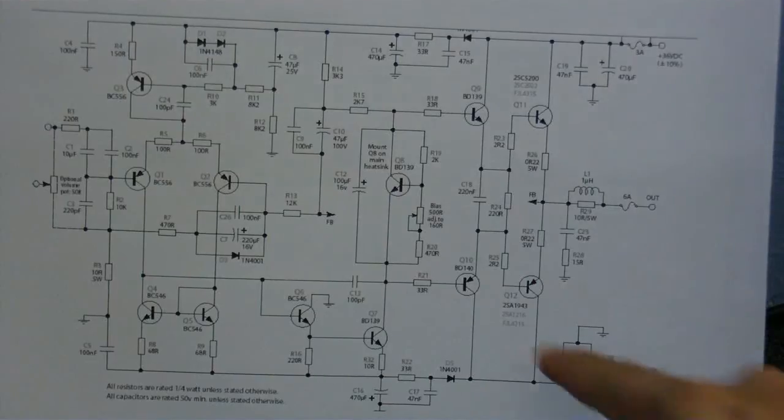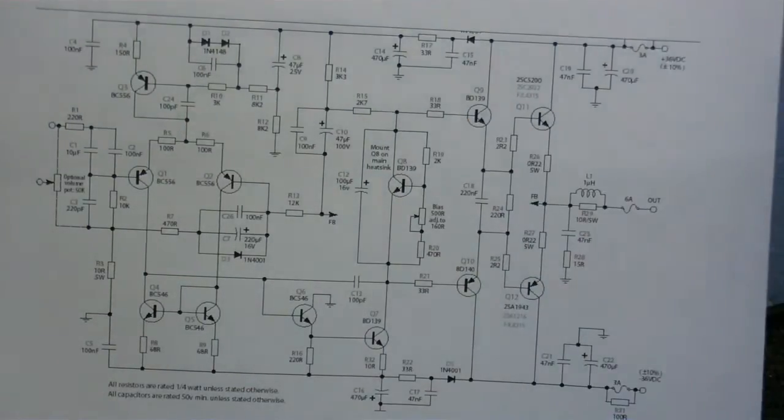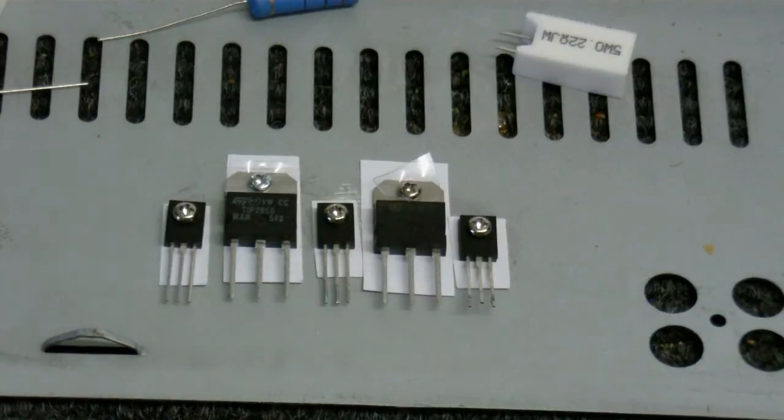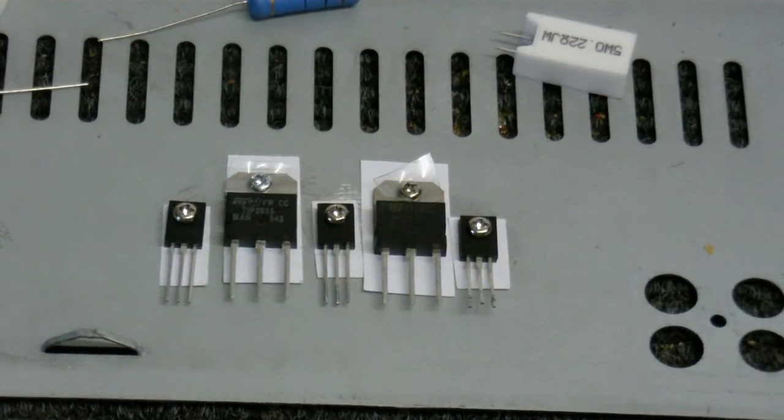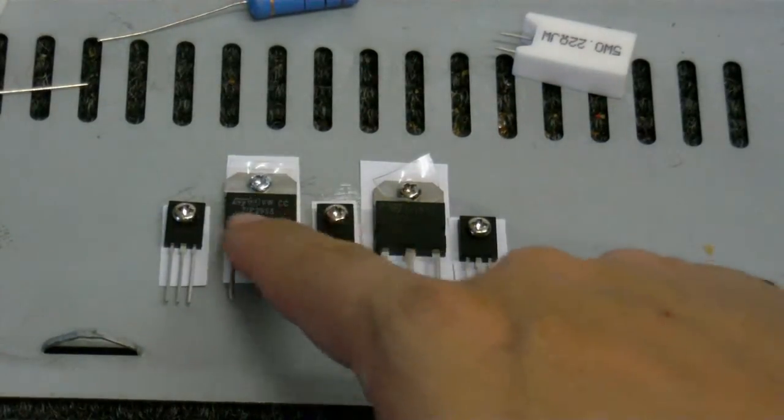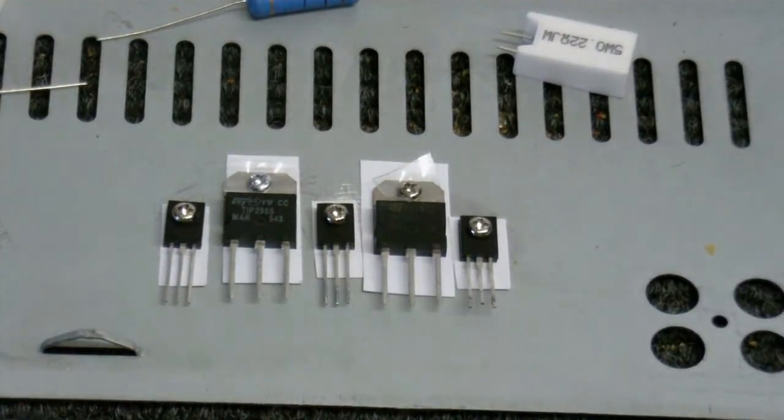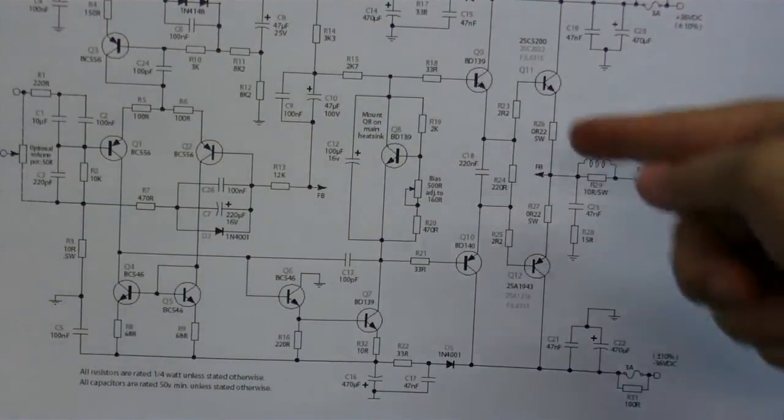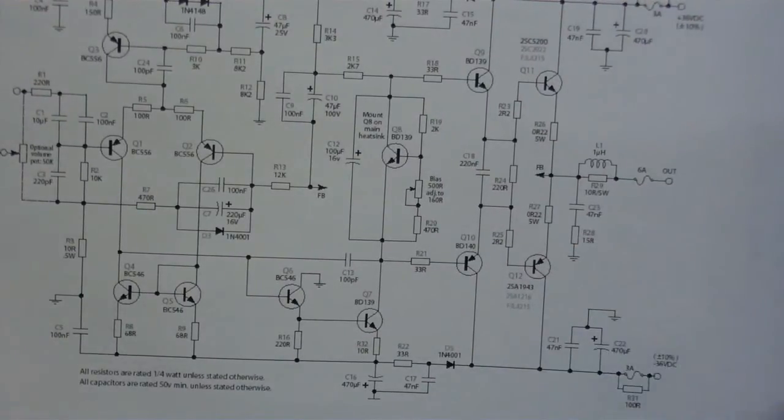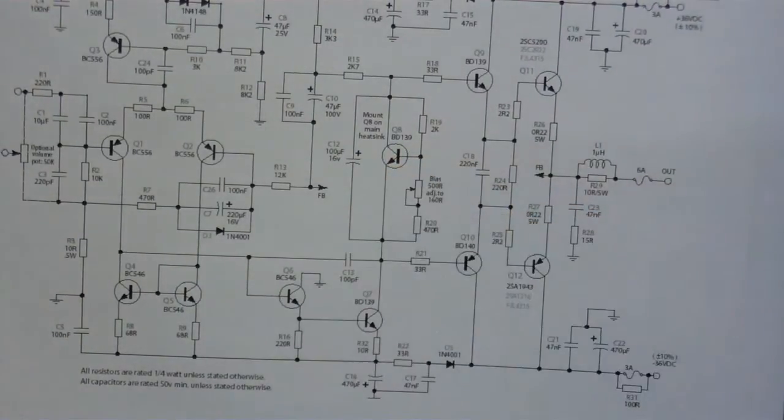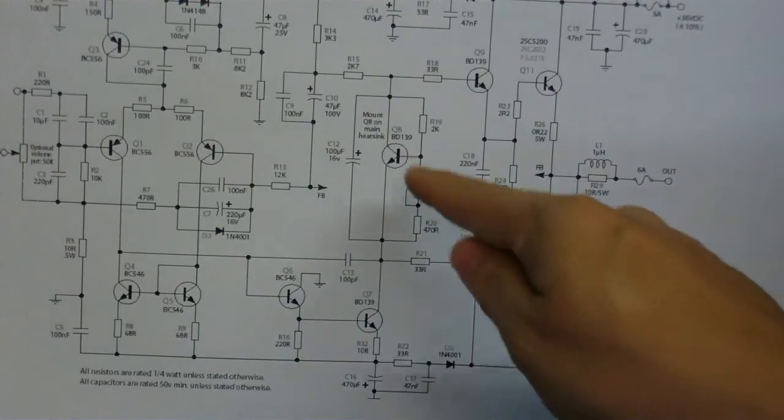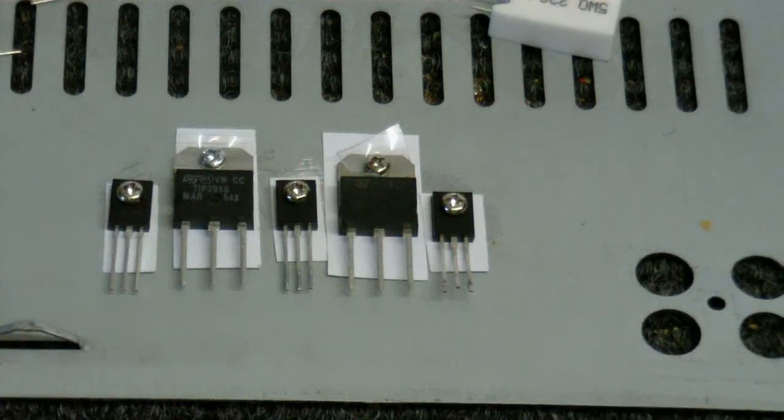These two on the end are these two transistors here. I don't know if they need a heat sink, but I've put them on the heat sink anyway, just to be safe. Now, these two here are going to be doing most of the heavy work. So, obviously, they need to be on the heat sink. And those are these two transistors here. And this one in the middle, you might be able to see that it says mount on main heat sink. So, that's why I've put it there.